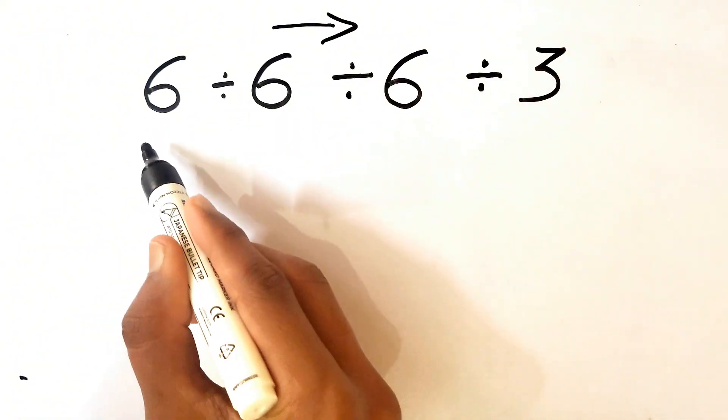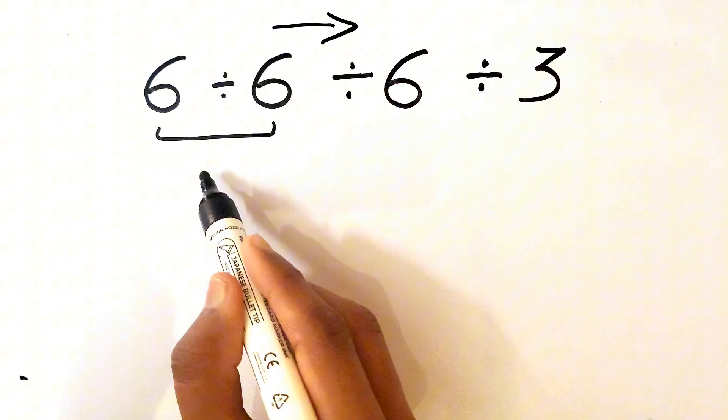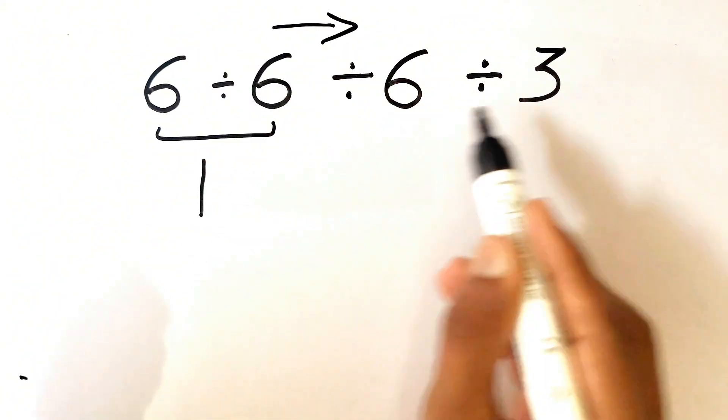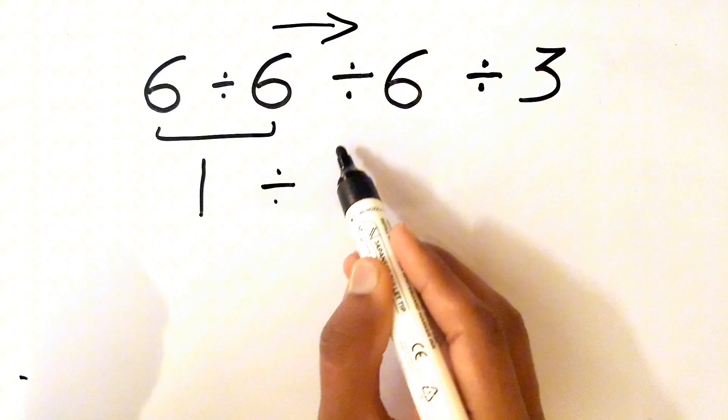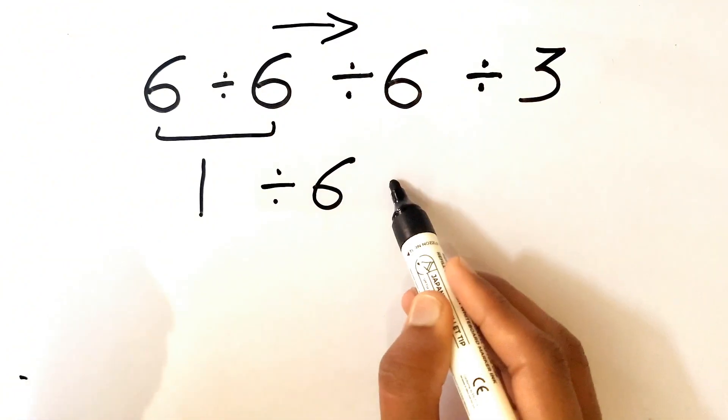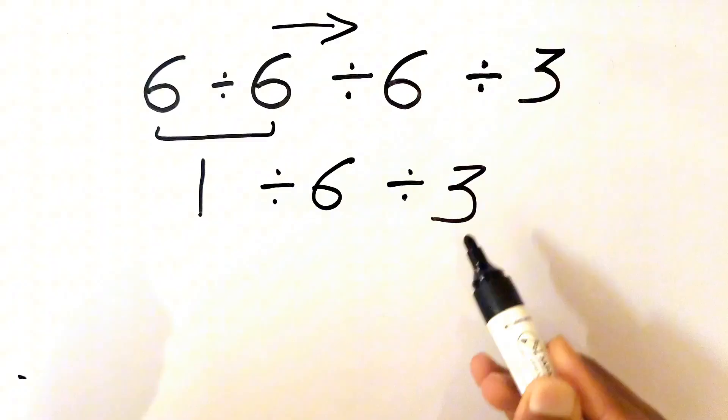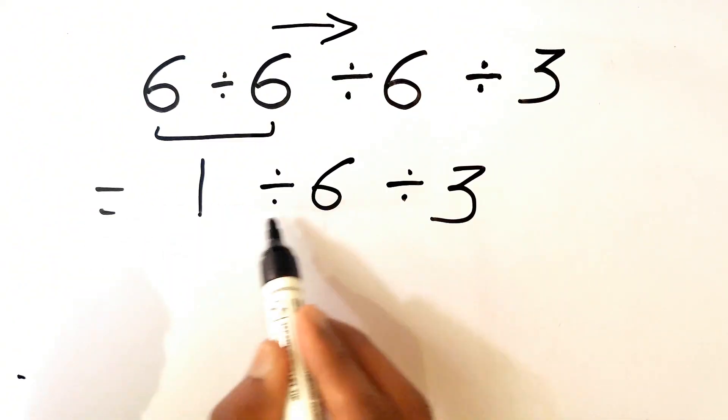As we can see there is division, so we need to go from left side towards the right. We'll go from this to this, so 6 divided by 6 gives us 1. Now we'll rewrite the expression to make the confusion less, so we'll write this as 1 divided by 6 divided by 3.